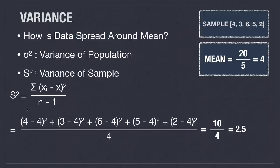Variance measures how data is spread around the mean. There is both a symbol for variance of the population as well as a symbol for the variance of a sample. To find it, we first calculate the mean, and then we sum all sample values minus the mean squared. Then we divide by the number of samples minus one in a situation where we are calculating a variance from a sample versus the entire population, which is what we'll almost always do. If we had data on the entire population, we would not include the minus one. Using our sample and our variance formula, this sample gives us a total variance of 2.5.